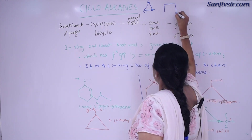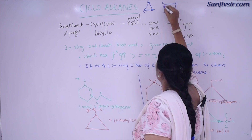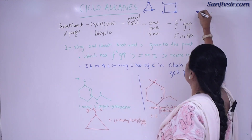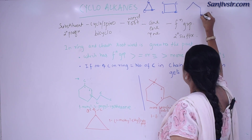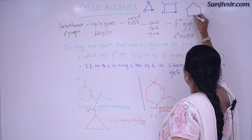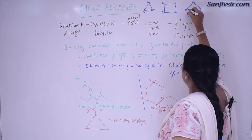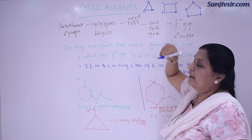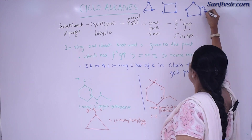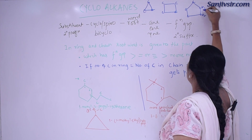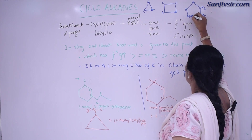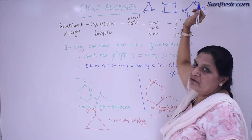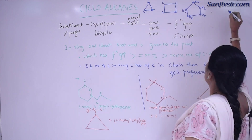This will be called cyclobutane. Five carbon atoms will be in each corner — here, here, here, here. You have to complete the valence. Here it will be CH₂, CH₂. Carbon has four bonds that should be satisfied. So this will be called cyclopentane.